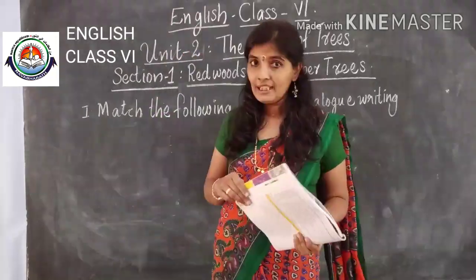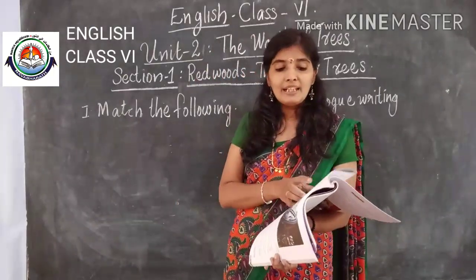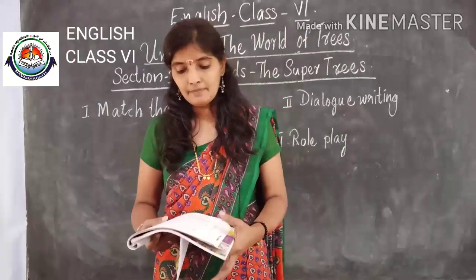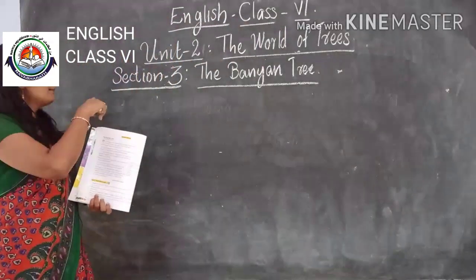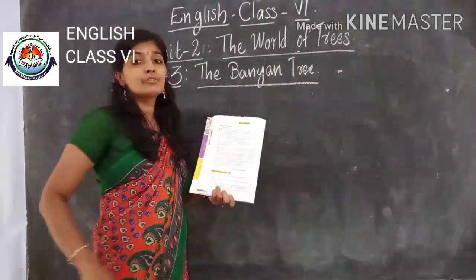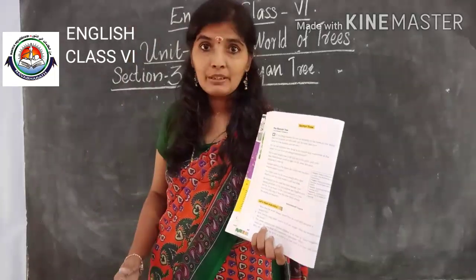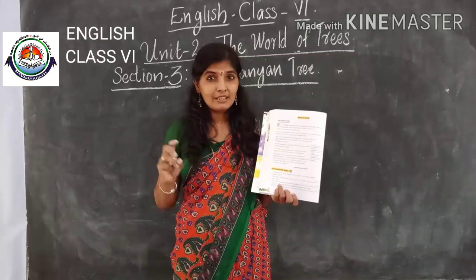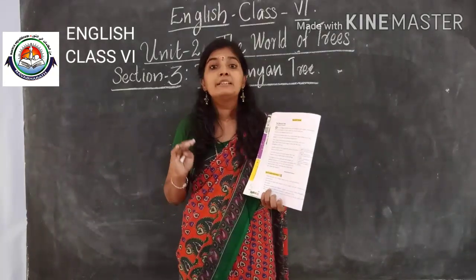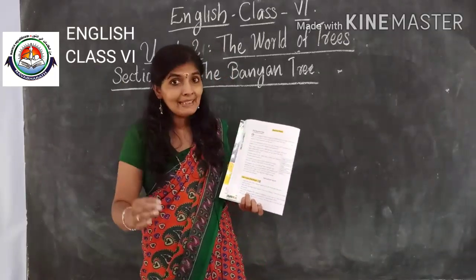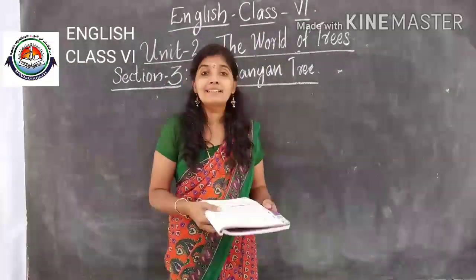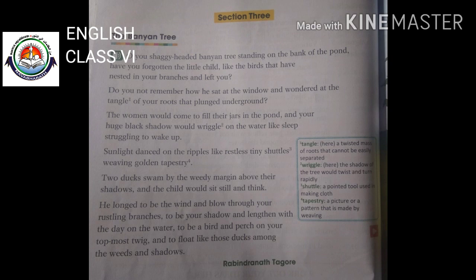Now we'll go for the next lesson: Section 3, a poem — 'The Banyan Tree.' This is a beautiful poem written by Rabindranath Tagore. You might remember that poems written by Rabindranath Tagore are really connected with the culture of India, the people of India, the climate of India. Here you can see the great Indian English poet Rabindranath Tagore, who has done wonders in the world of literature.